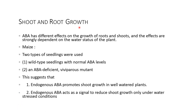Shoot and root growth: abscisic acid has different effects on growth of roots and shoots, and these effects are strongly dependent on the water status of the plant. In maize, two types of seedlings were used — one is wild-type seedling with normal abscisic acid levels, and another is the abscisic acid-deficient viviparous mutant. This suggests that endogenous abscisic acid promotes shoot growth in well-watered plants, and acts as a signal to reduce shoot growth only under water-stressed conditions.